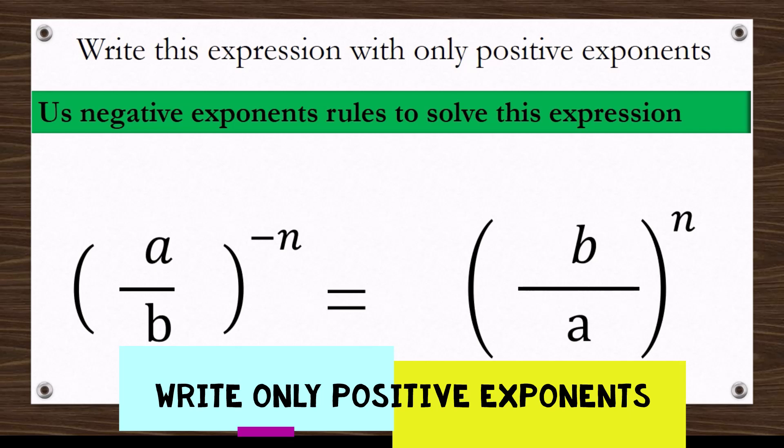To change that, the rule we use is B divided by A, and the whole thing to the power n, which is the number 3 in our case, to make it a positive exponent. That's the question we're looking for here.